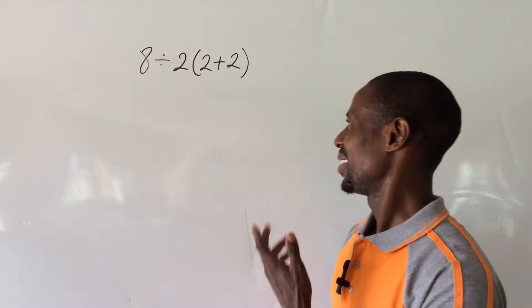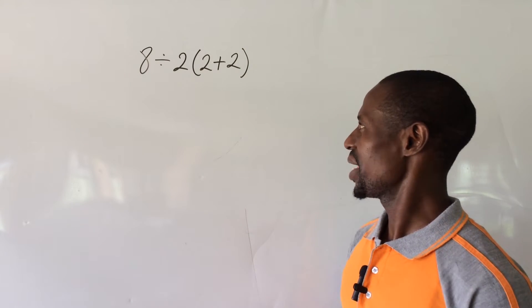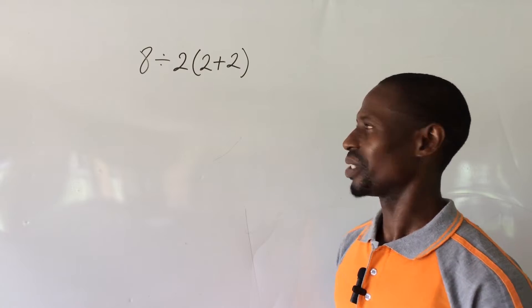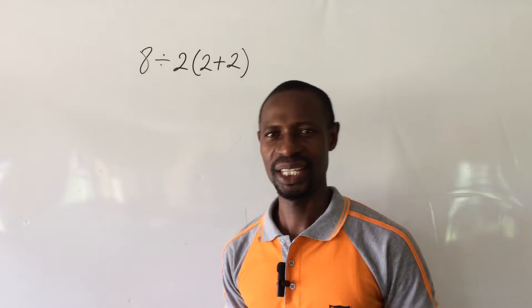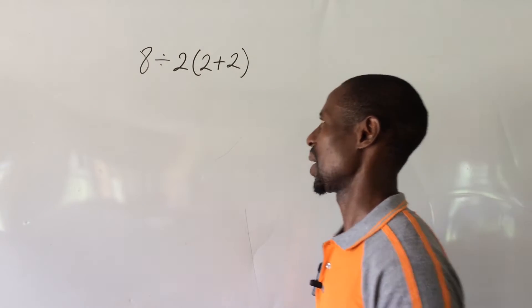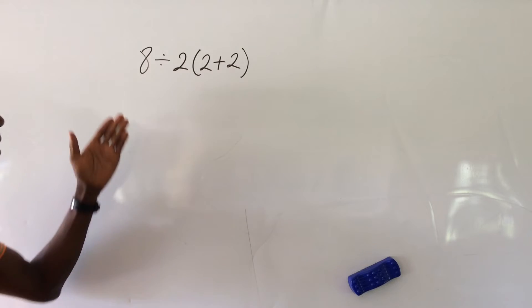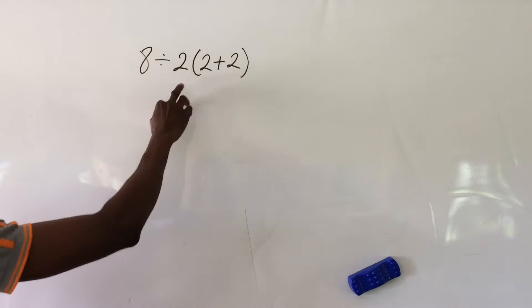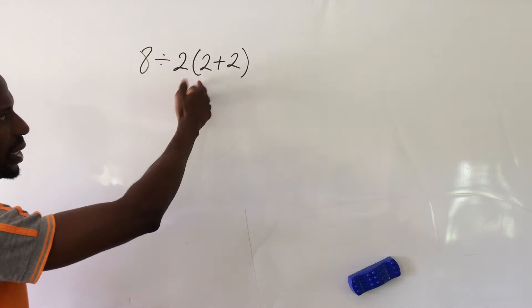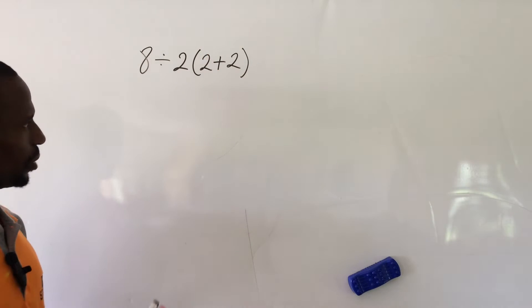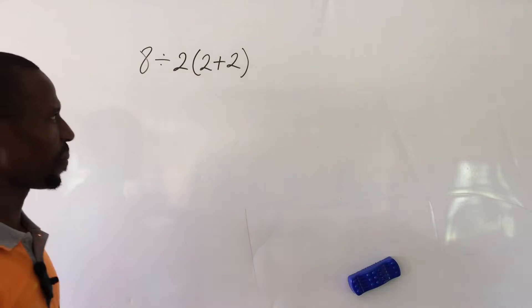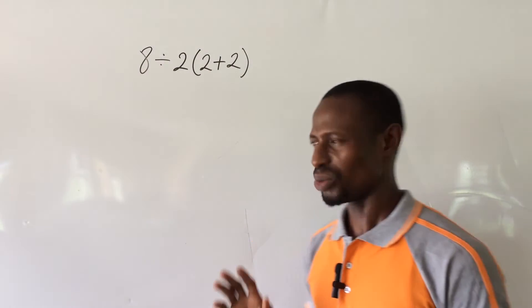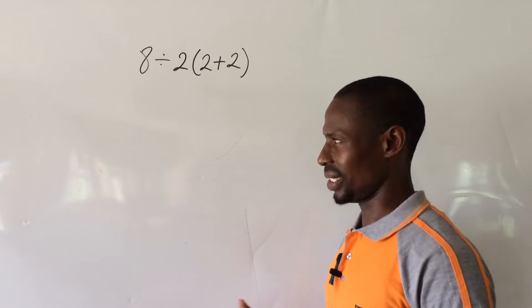Welcome to today's challenge. The question appears very simple but many people will fail this simplification because it has different signs attached. We have a division sign, we have a bracket, and we have addition enclosed in the bracket. And so many people will fail this question.